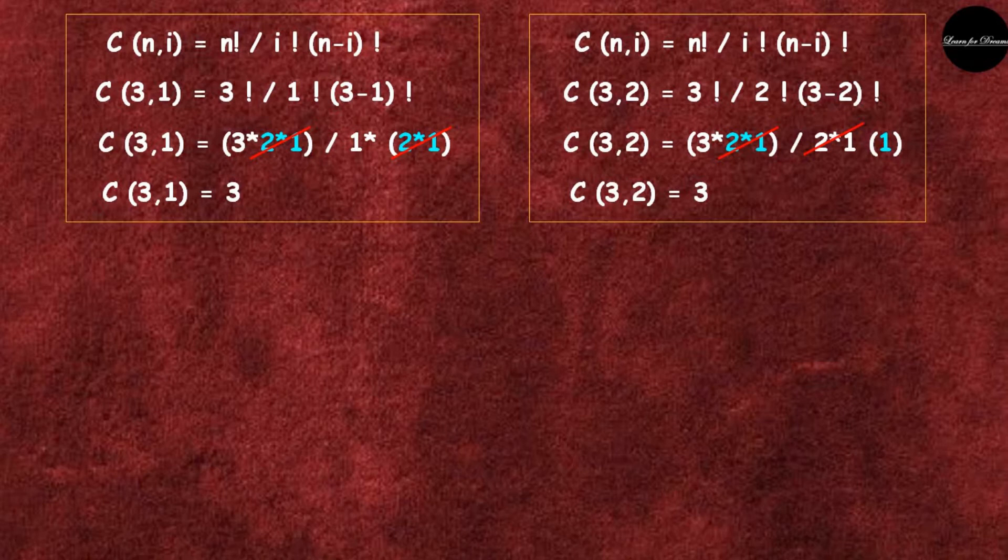After cancellation, C(3,1) is equal to 3. Similarly for C(3,2), the value is 3.